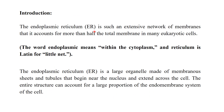The endoplasmic reticulum is such an extensive network of membranes that it accounts for much more than half of the total membranes in many eukaryotic cells. The word 'endoplasmic' means within the cytoplasm, and 'reticulum' means little net. So it is the network of tubules — a little net — that is present in the cytoplasm. The endoplasmic reticulum is a large organelle made of membrane sheets and tubules that begin near the nucleus and extend across the cell.